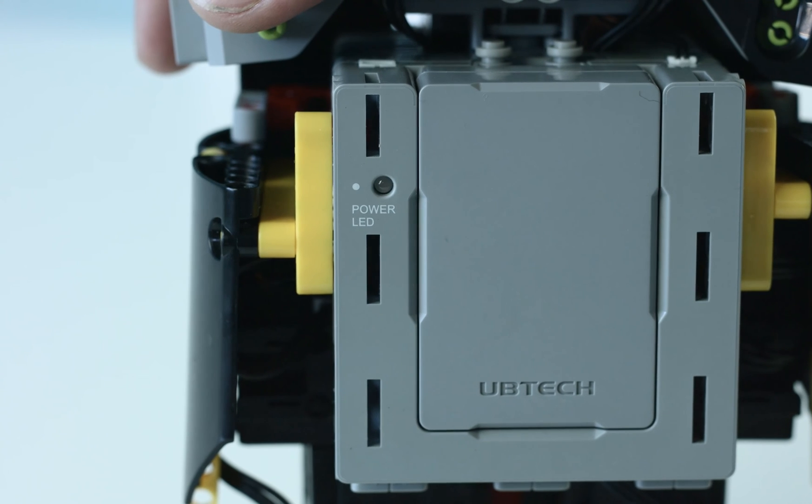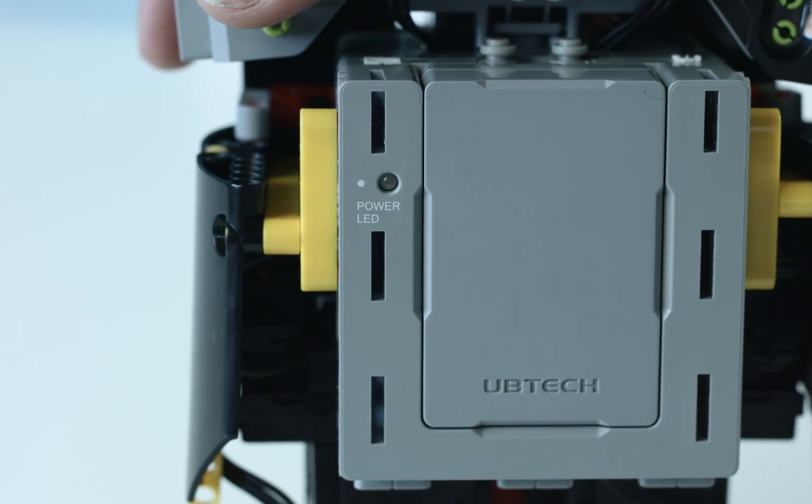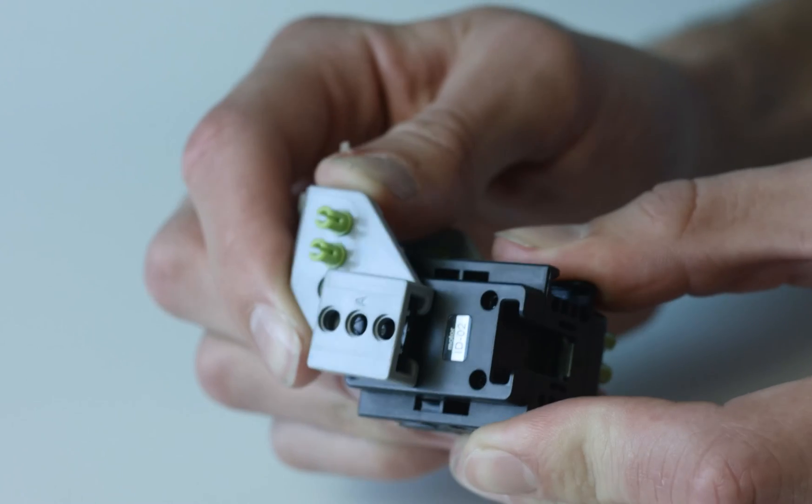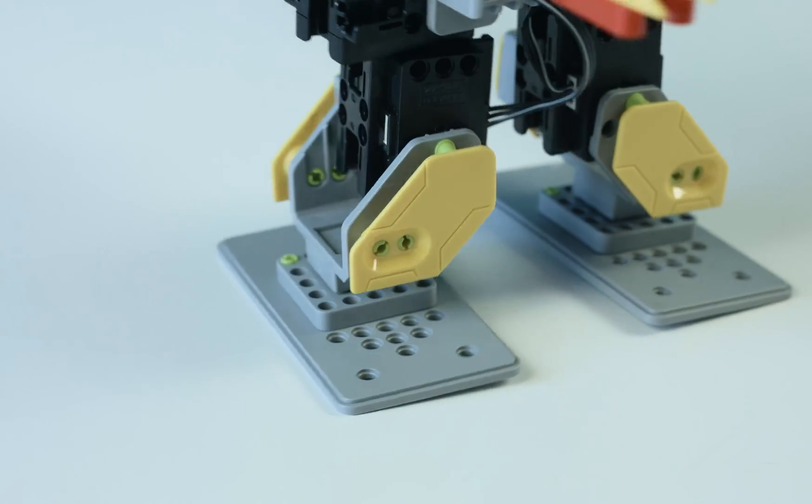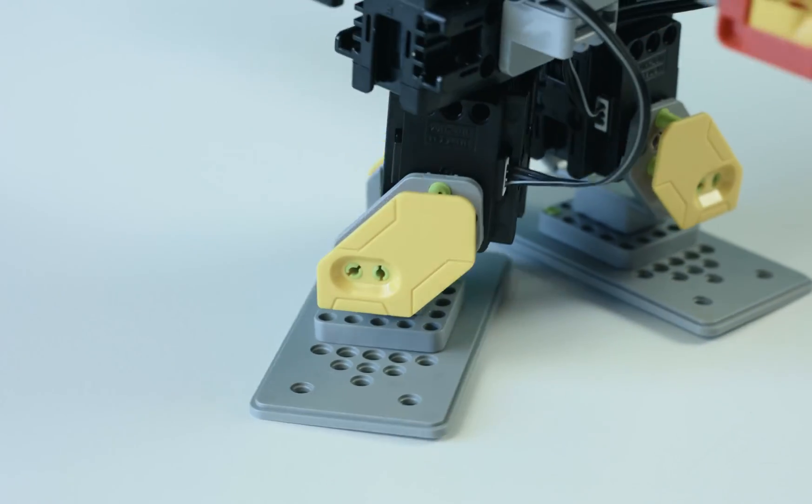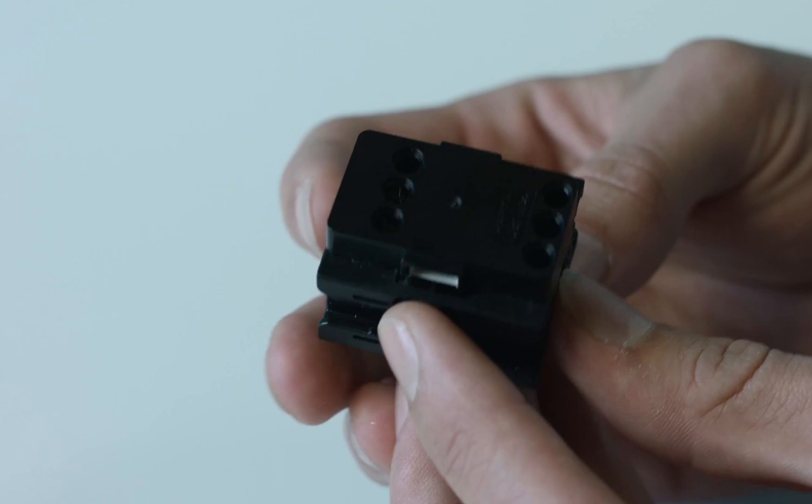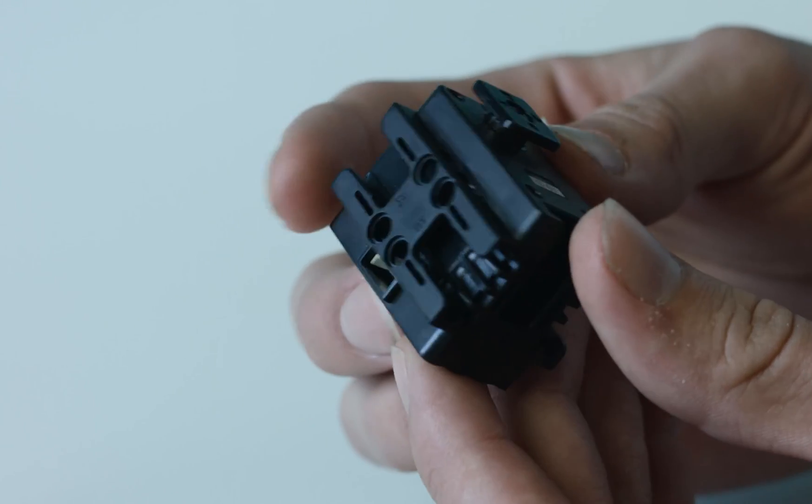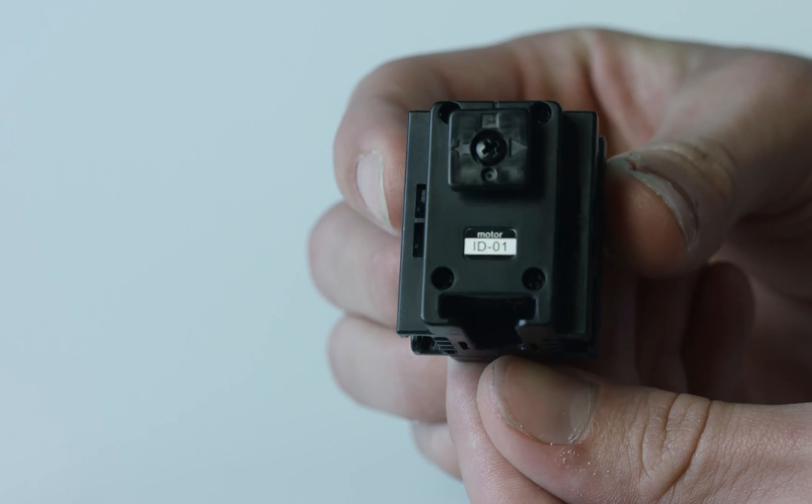The brains behind Jimu's movements is the main control box which is connected to the robotic servo motors. These servo motors act as joints and aid Jimu's ability to move. Make sure to pay attention to their numbered ID and connect to Jimu in the right place as you build your Jimu character.